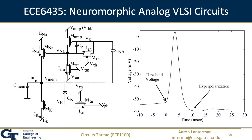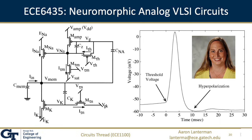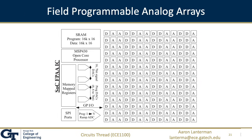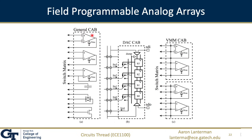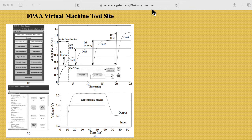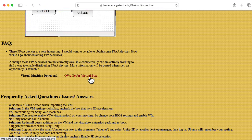I wanted to mention ECE6435, the neuromorphic analog VLSI circuits class taught by my colleague Jennifer Hassler. The circuit shown here, which consists of MOSFETs and capacitors, mimics the behavior of biological neurons — the NA subscripts stand for sodium, and the K subscripts stand for potassium. Dr. Hassler's research group has focused on the development of field programmable analog arrays, which contain some of the usual digital switching logic from a field programmable gate array, but also add analog blocks containing elements like operational transconductance amplifiers, individual capacitors, transmission gates, and MOSFETs that you can hook together in flexible ways.